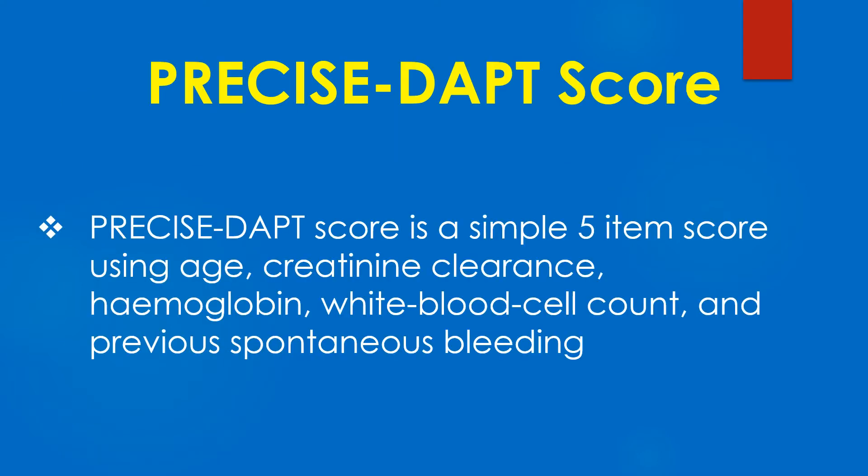PRECISE DAPT score is a simple 5-item score using age, creatinine clearance, hemoglobin, white blood cell count, and previous spontaneous bleeding.